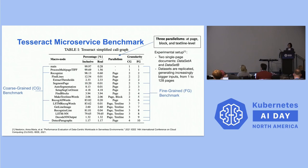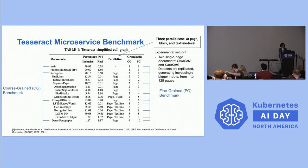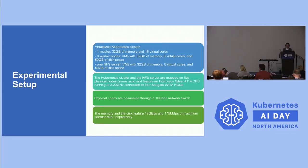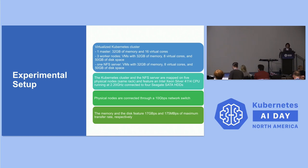You can check more details in our published papers from Cloud 2021. The coarse-grained benchmark includes five microservices for different stages, and the fine-grained includes eleven microservices. We use two types of input data to generate different sizes of input for the machine learning pipeline. Our environment includes three worker nodes with 32GB memory, 8 CPUs, 50GB disk space, and one NFS server deployed in the same rack to emulate data access patterns.